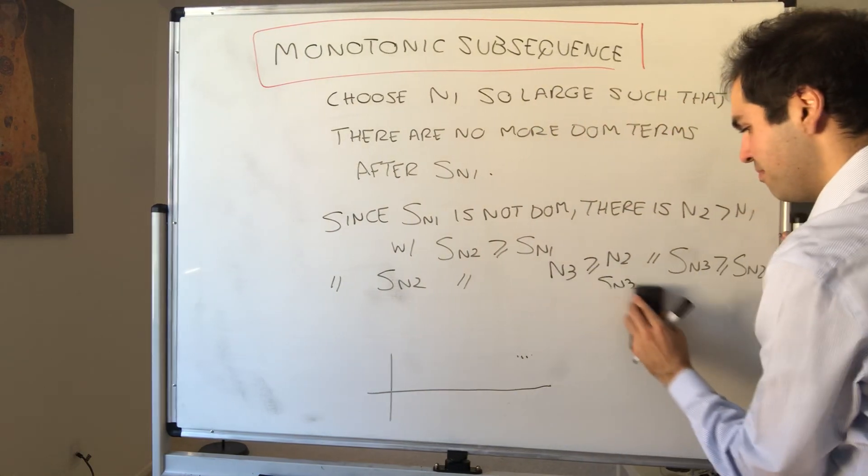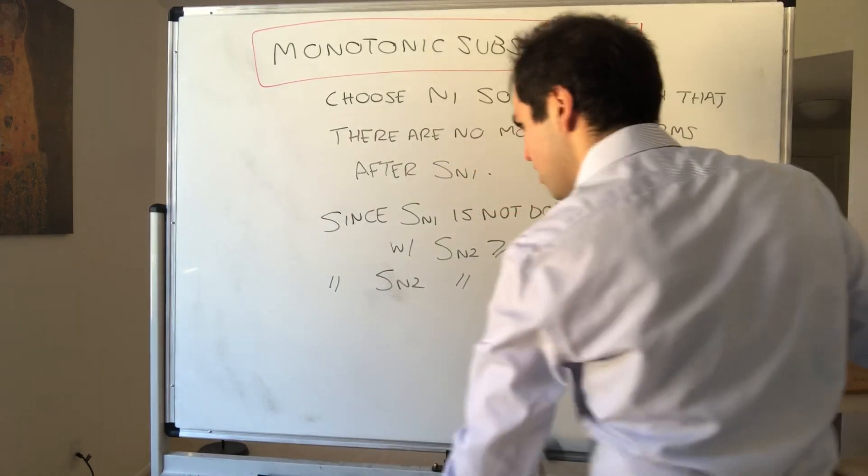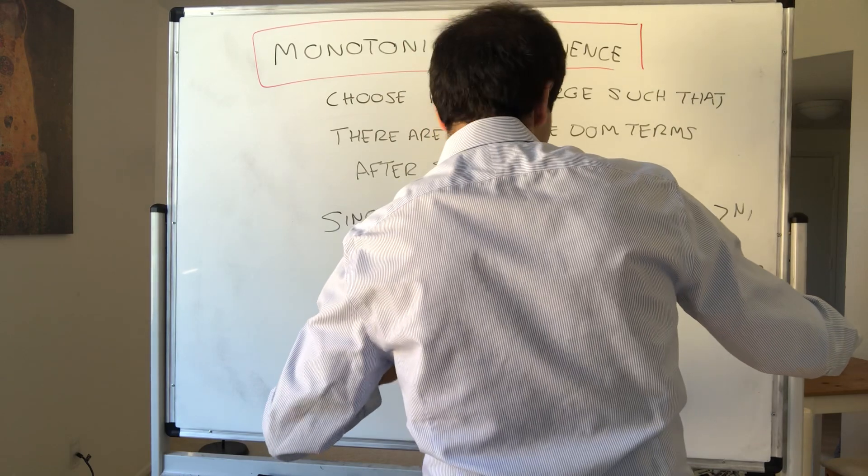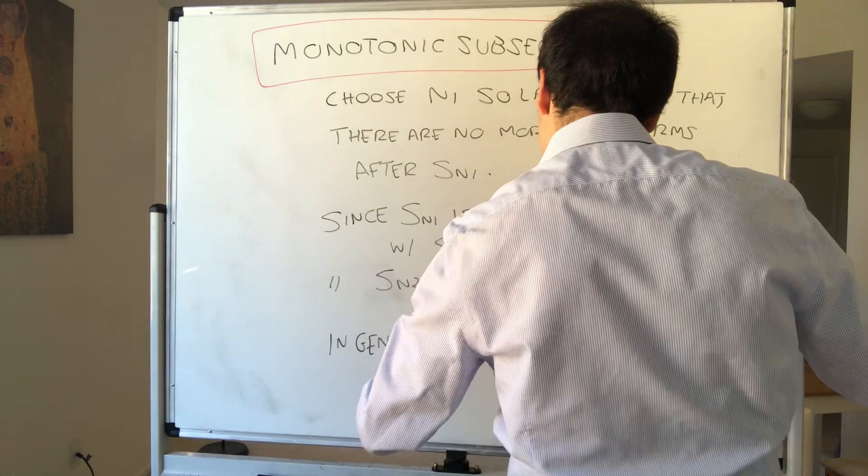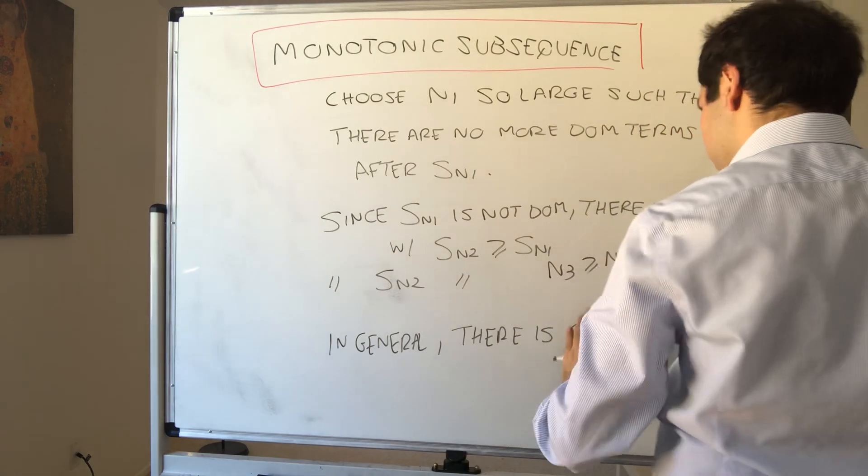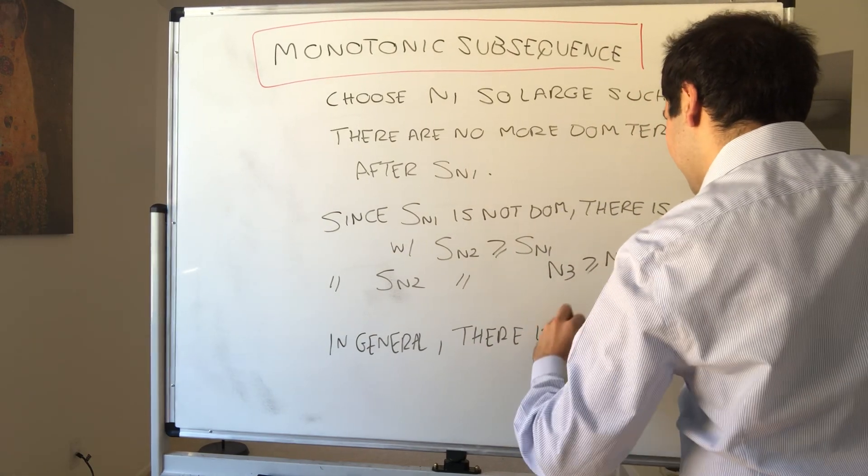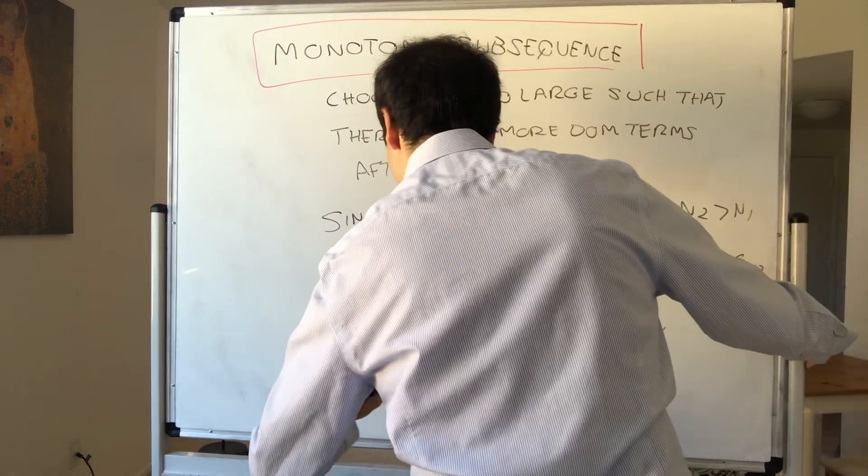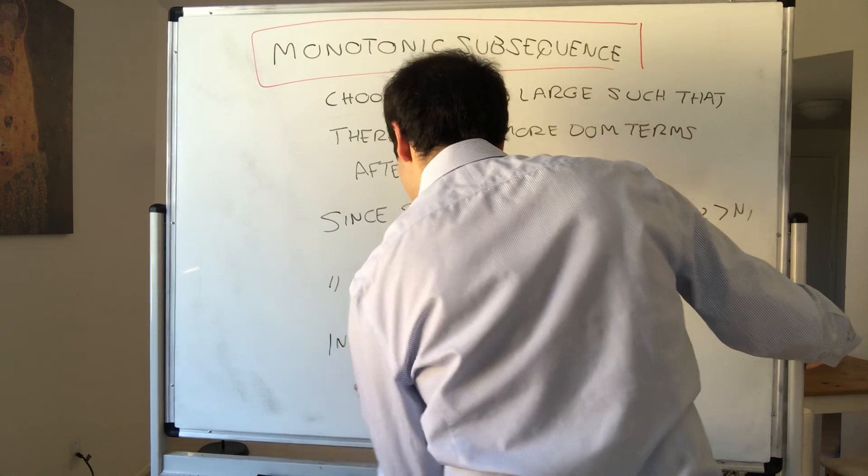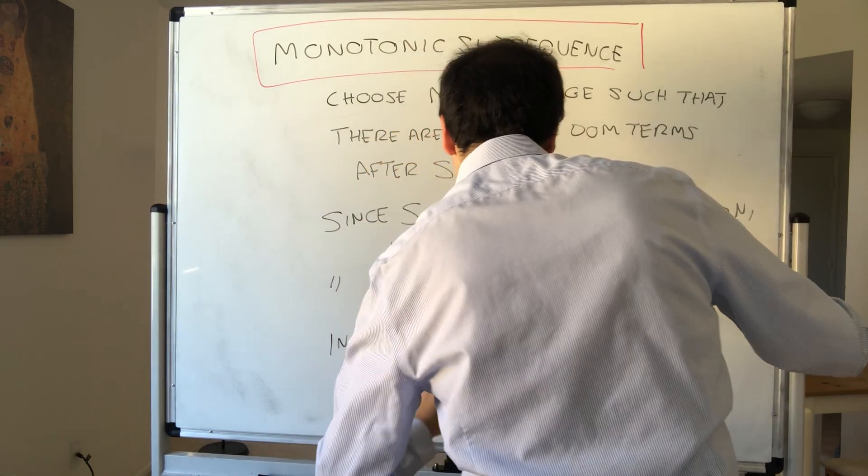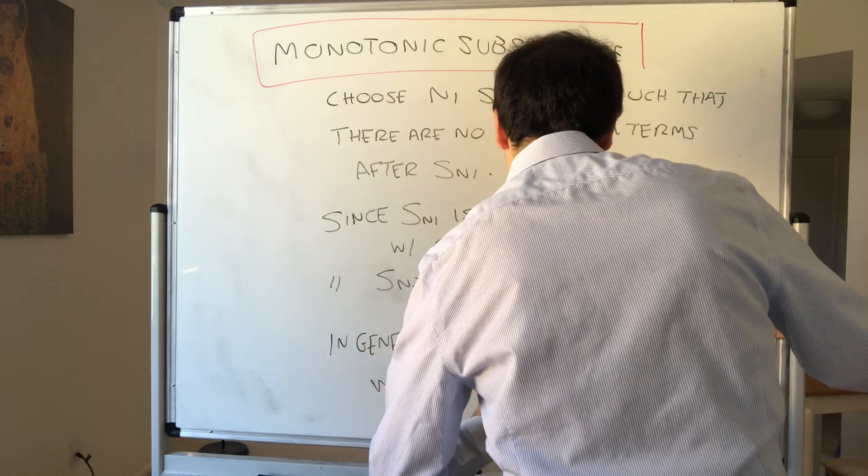And in general, there is Nk plus 1 bigger than Nk with Snk plus 1 greater than or equal to Snk. And then we're done. So Snk is non-decreasing, and hence monotonic.